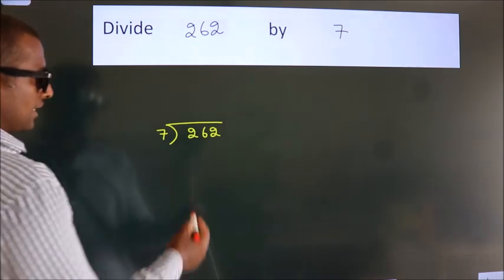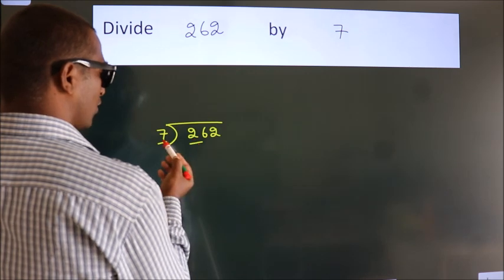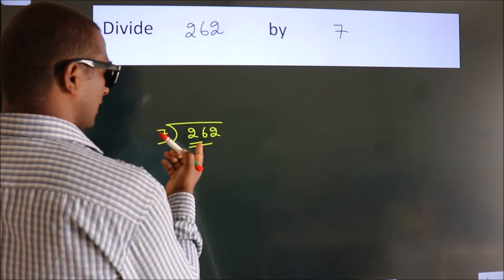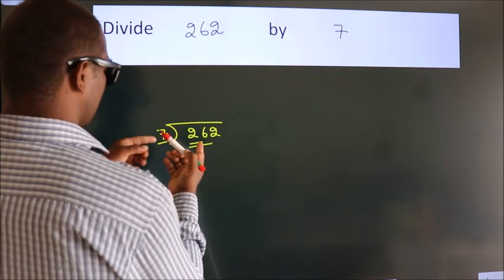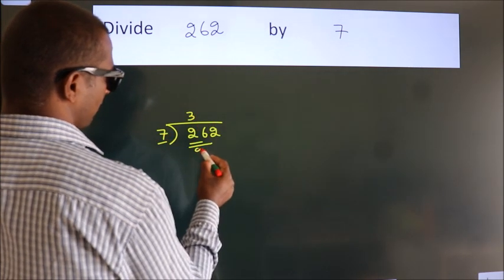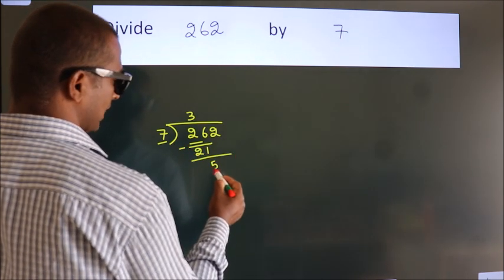Next. Here we have 2. Here 7. 2 smaller than 7. So, we should take 2 numbers, 26. A number close to 26 in 7 table is 7 threes 21. Now, we should subtract. We get 5.